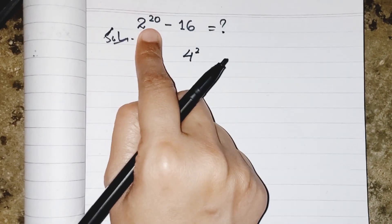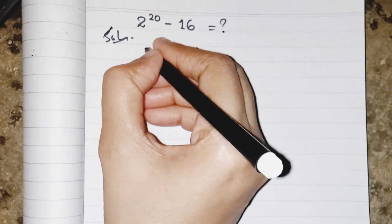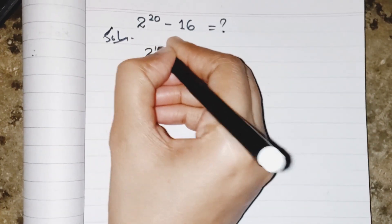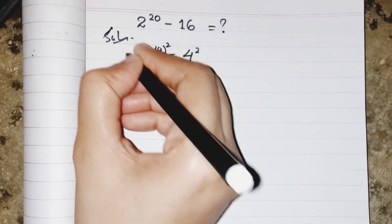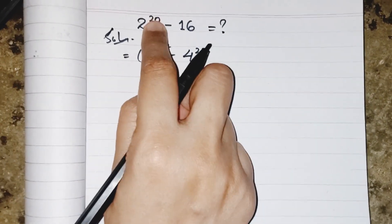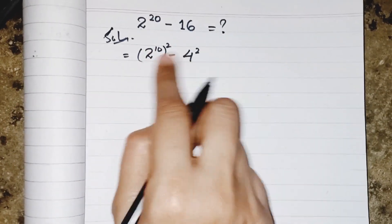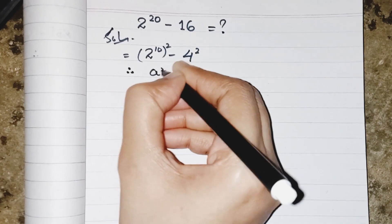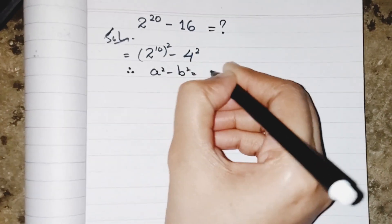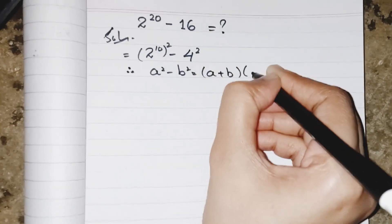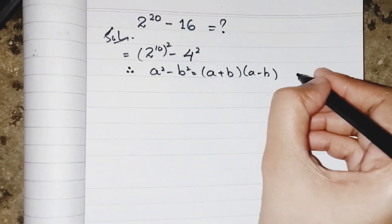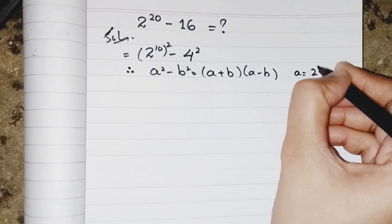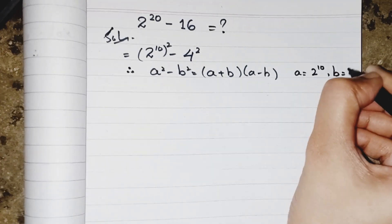To make it simpler, I'm splitting the power 20 as 2 to the power 10 squared, which results in 2 to the 10. This becomes easier using a squared minus b squared equals (a plus b)(a minus b), where a equals 2 to the power 10 and b equals 4.